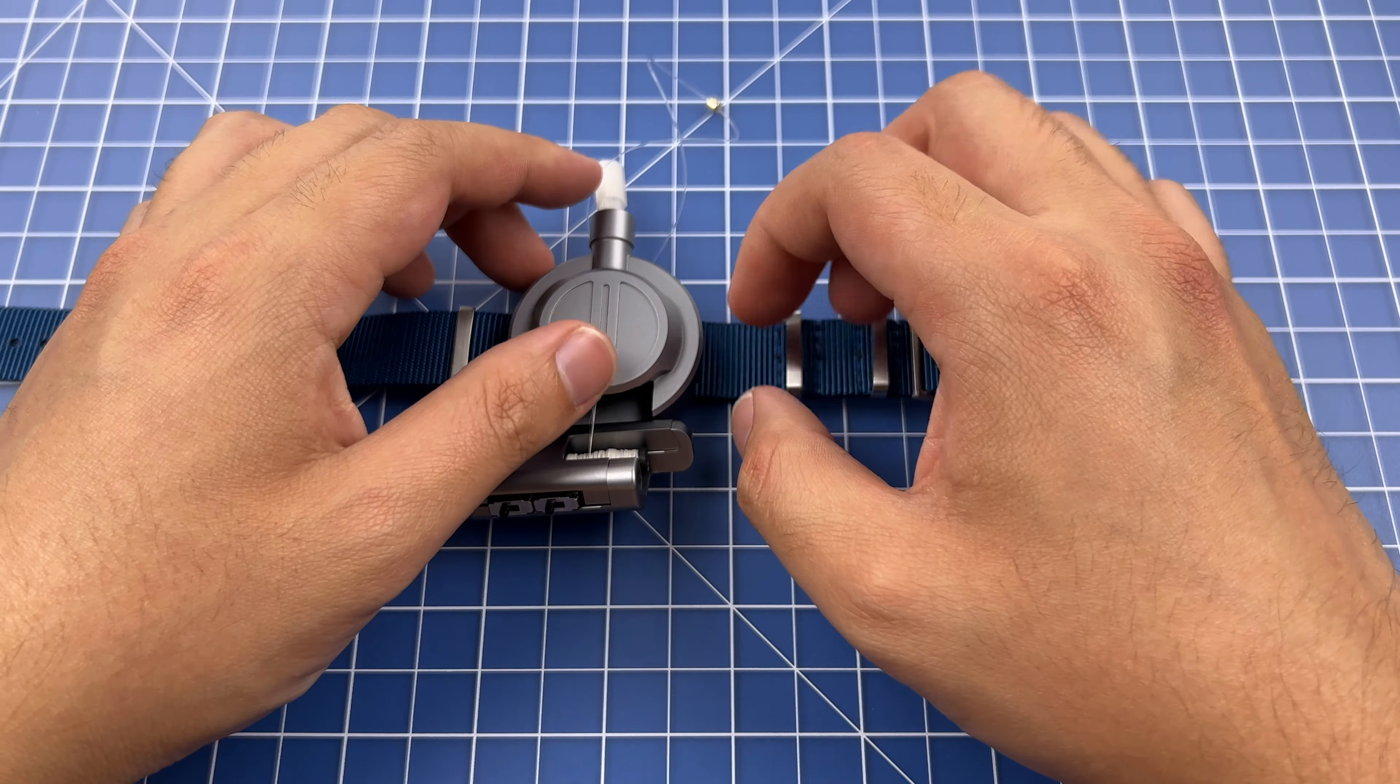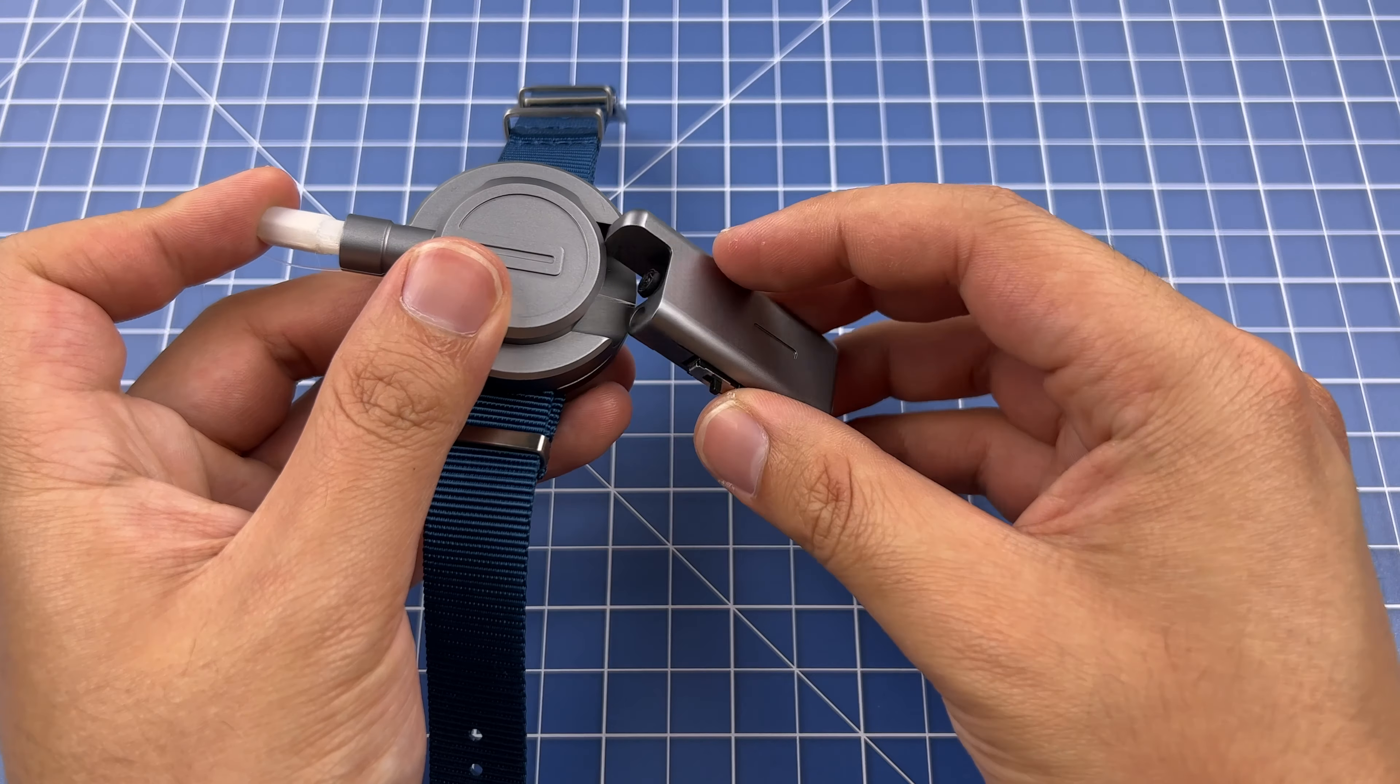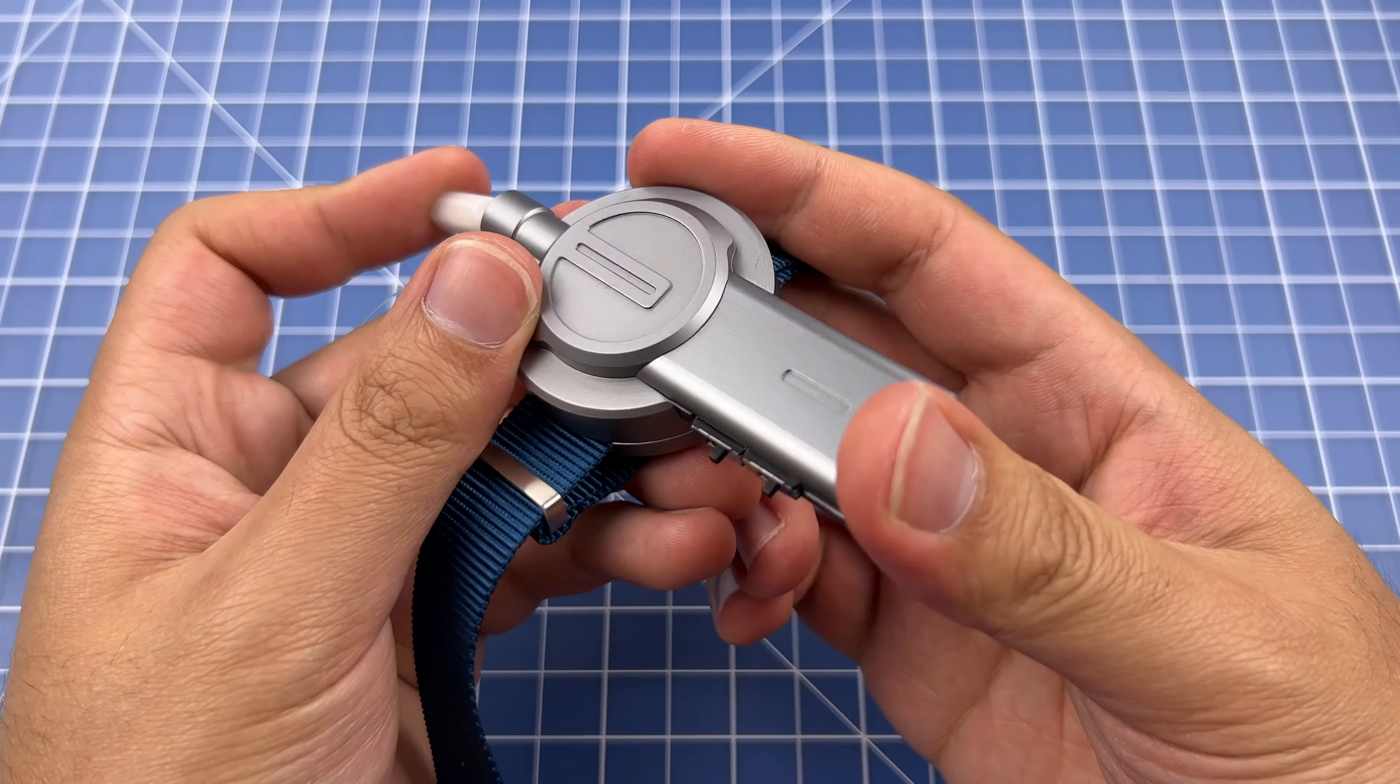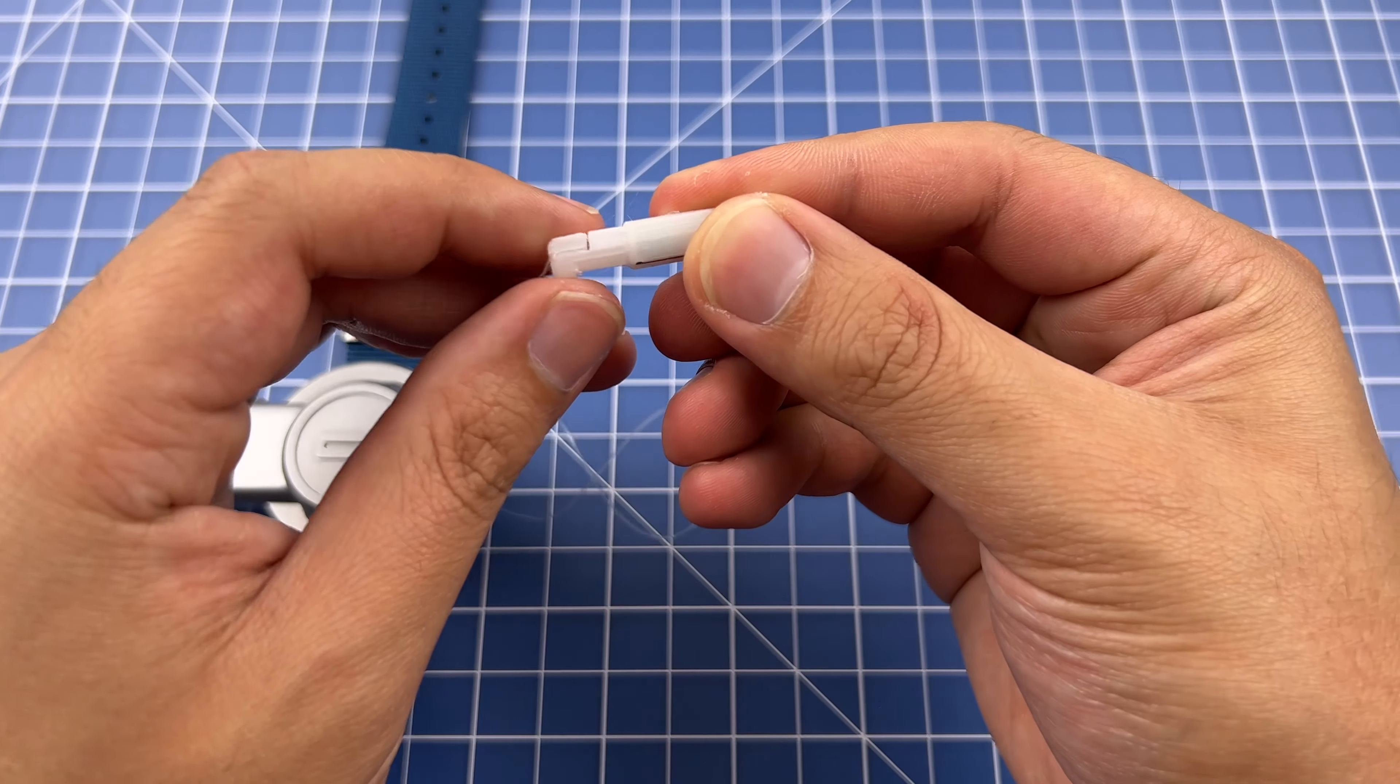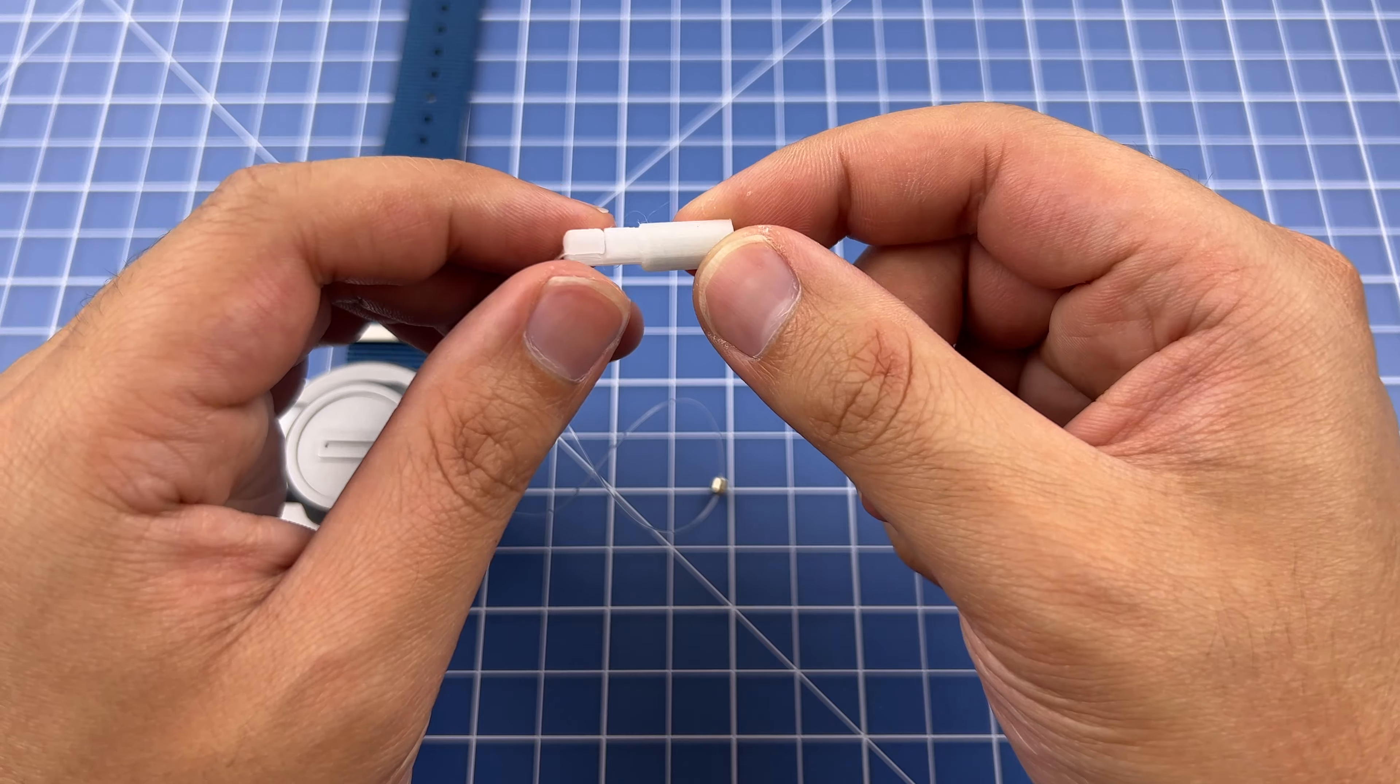We're now ready to load the thread cartridge back in. From this position, you can see there's tension on the line. You just simply slot the thread cartridge in and push it in. Now to load the projectile in, you'll notice that there are two sides to the projectile.